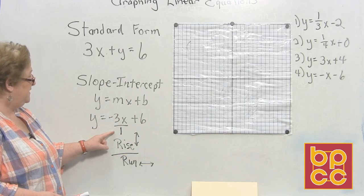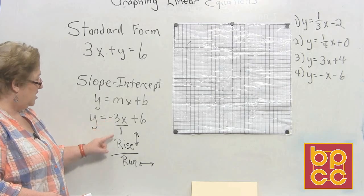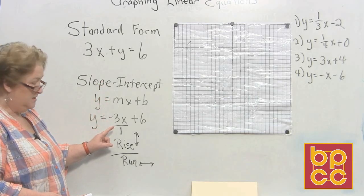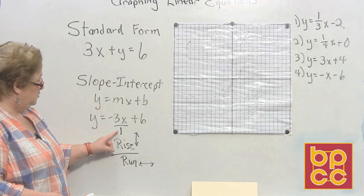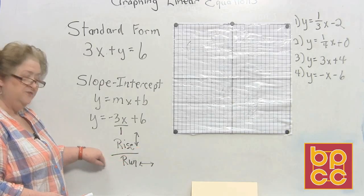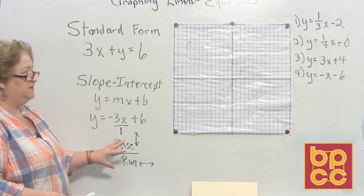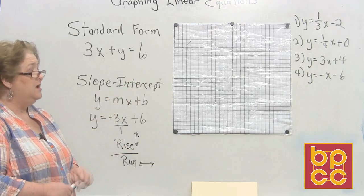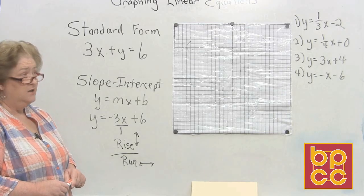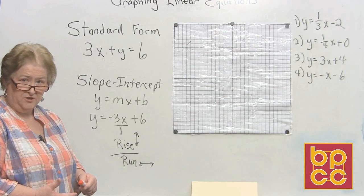The slope is made up of a top and a bottom. The top number is called the rise — it goes up for positive, down for negative. The bottom number is called the run — it goes positive to the right and negative to the left. We're going to use this information, and I have some graphing items here already in slope-intercept form, so we'll practice plotting on the y-intercept and then doing what the slope tells us to do.